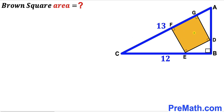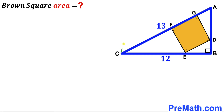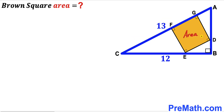Welcome to PreMath. In this video we have a brown shaded square DEFG fully inscribed in a right triangle ABC. Its side BC is 12 units and its hypotenuse AC is 13 units. Our task is to calculate the area of this brown shaded square.